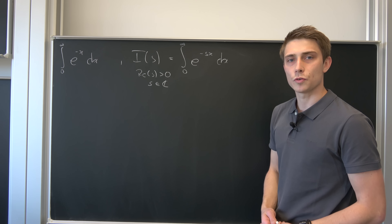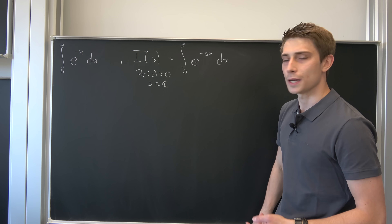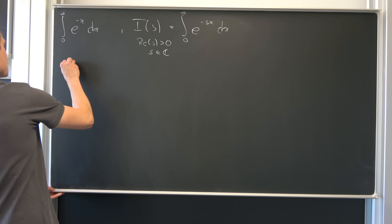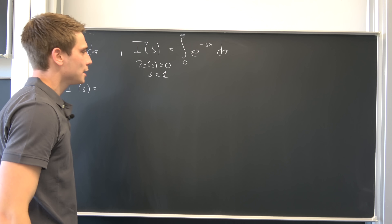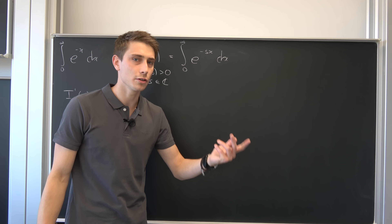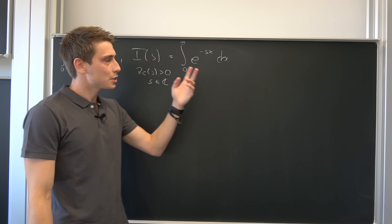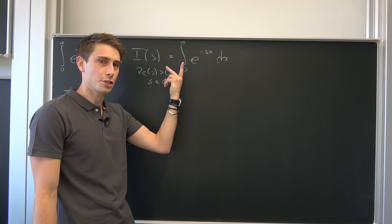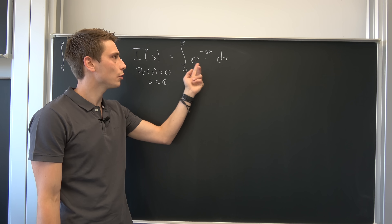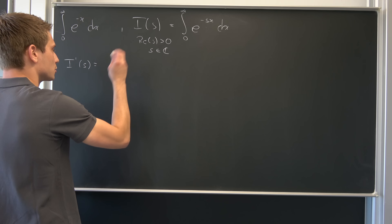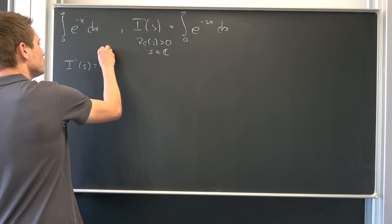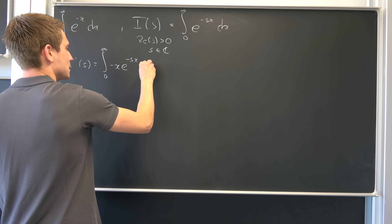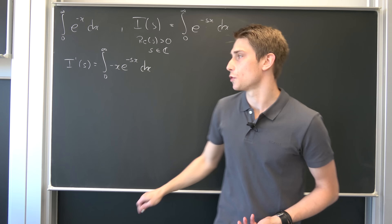We want to use the Leibniz rule for differentiation under the integral sign — link in the description if you don't know what that is. So first let's differentiate this integral. I prime of s: since the upper and lower bounds are independent of s, we can interchange the integral sign and the differential. We take the partial derivative with respect to s and end up with the integral from 0 to infinity of minus x times e to the minus s times x dx.